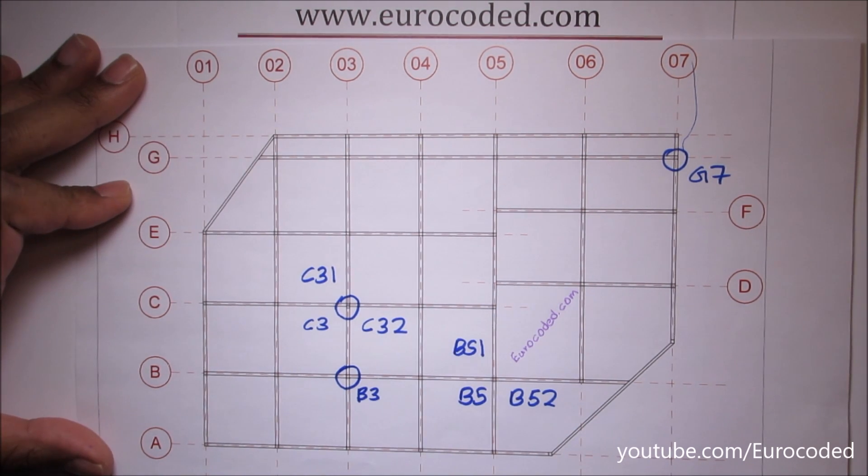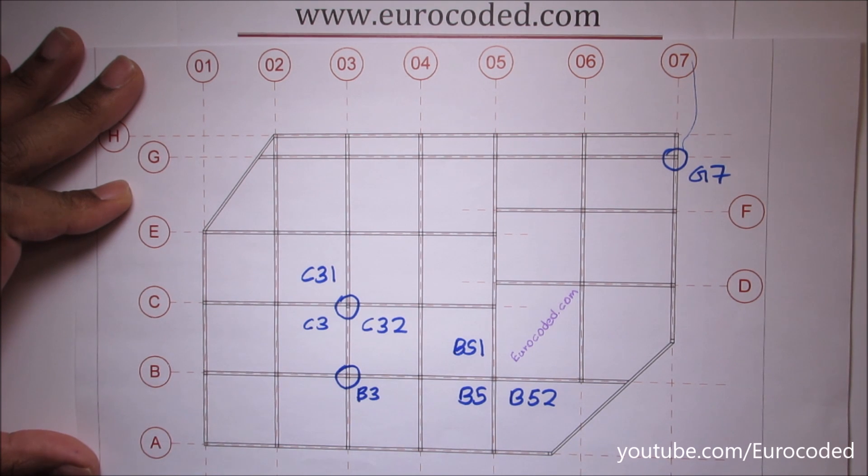That is how you can use a grid reference system to number your columns and your beams.